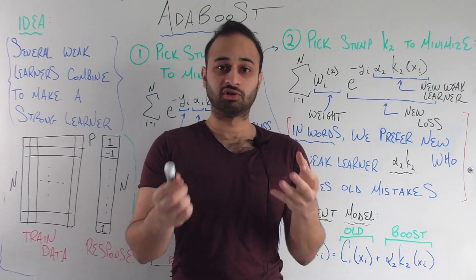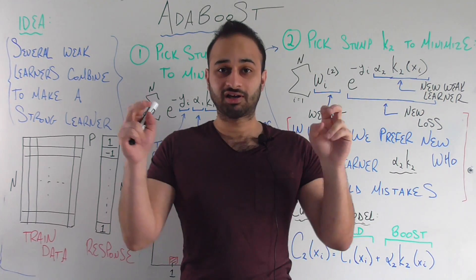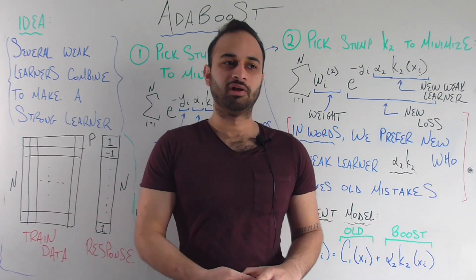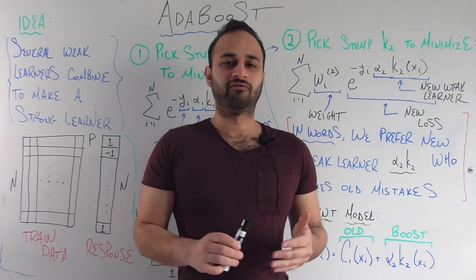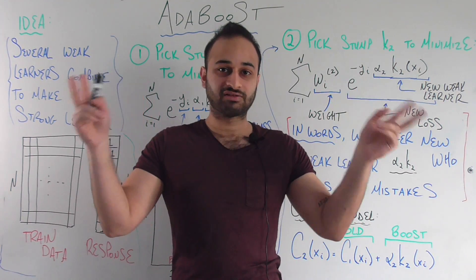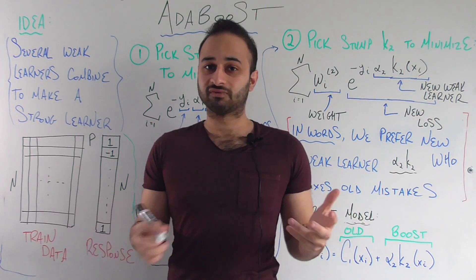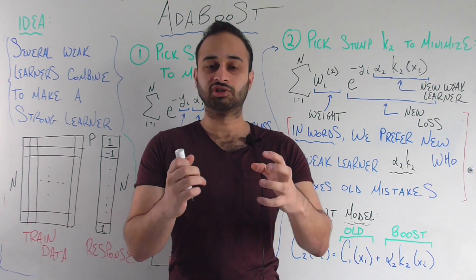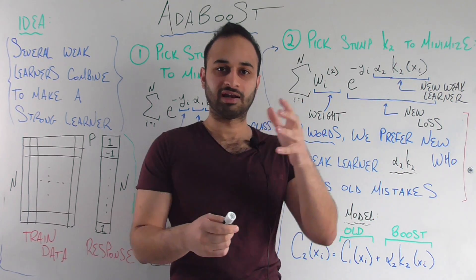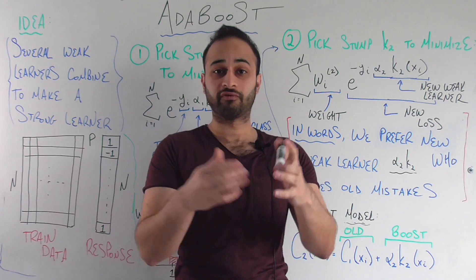Another source of overfitting, which is not really the model's fault but is really the fault of the person who is building it, is that you might choose weak classifiers that aren't actually weak. For example, if you're using a very complicated neural network as your weak classifier, then it kind of defeats the whole purpose of AdaBoost. So make sure that you're using a truly weak classifier at each step in order to prevent overfitting.